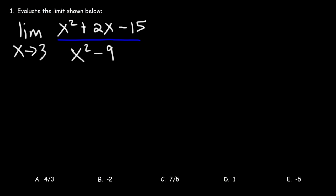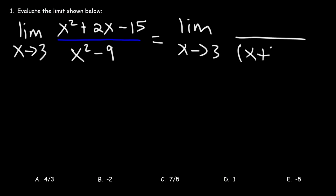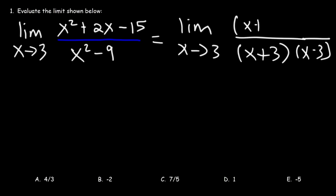Number one: evaluate the limit shown below. It's always good to try direct substitution first. However, plugging in 3 gives zero in the denominator, so we can't use direct substitution. We need to factor the expression. For a difference of perfect squares, x squared minus 9 factors as x plus 3 times x minus 3. What two numbers multiply to negative 15 but add to positive 2? That's positive 5 and negative 3. We can then cancel the x minus 3 factor.